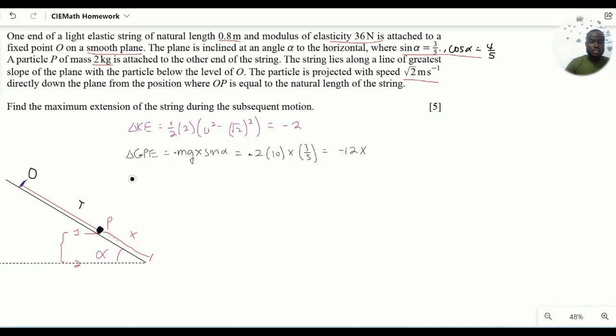Finally, let's look at the change in elastic potential energy. Remember the projection was done from where P was 0.8 meters from O. There was no stretch in the string, so there was no initial elastic potential energy stored. We only have a final elastic potential energy stored when the string was stretched by x. That would mean the stretch due to x minus zero.